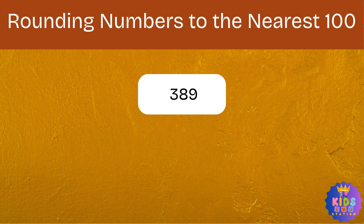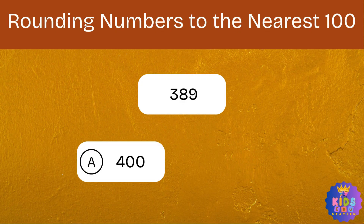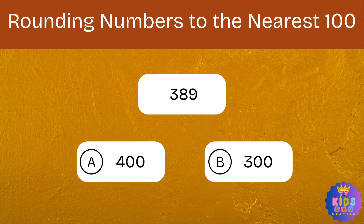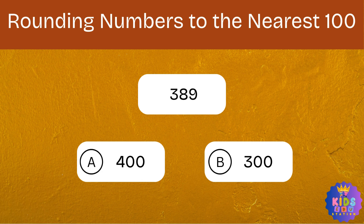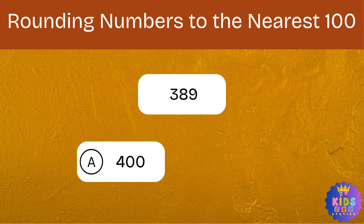Round 389 to the nearest hundred. Option A: 400. Option B: 300. And the correct answer is 400.